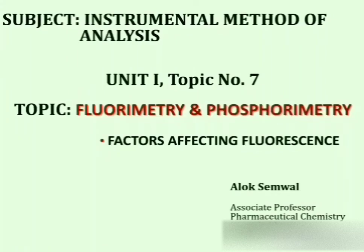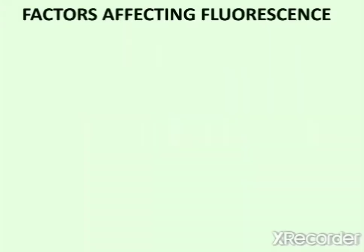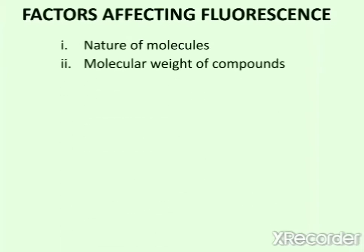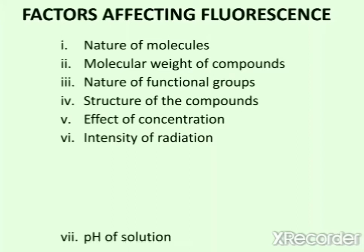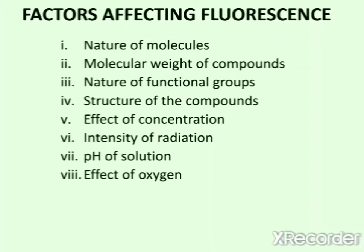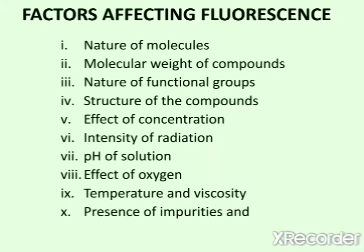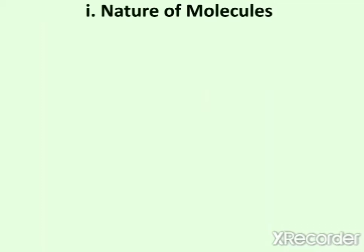Hello students, my name is Alok Samwal. Today's lecture is about factors affecting fluorescence intensity. There are several factors which affect fluorescence intensity. These factors include nature of molecules, molecular weight of compounds, nature of functional groups, structure of compounds, effect of concentration, intensity of radiation, pH of solution, effect of oxygen, temperature and viscosity, presence of impurities, and chemical quenching effect. The first factor is nature of molecules.